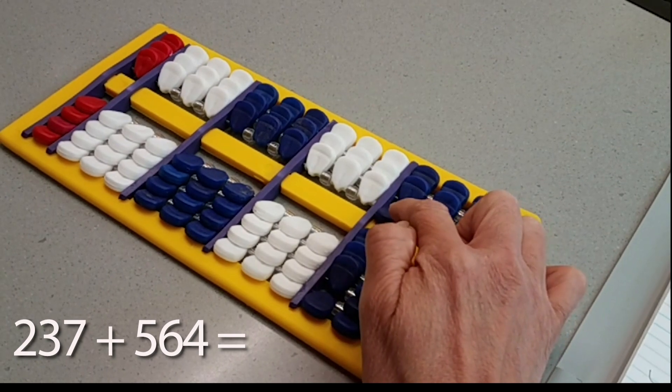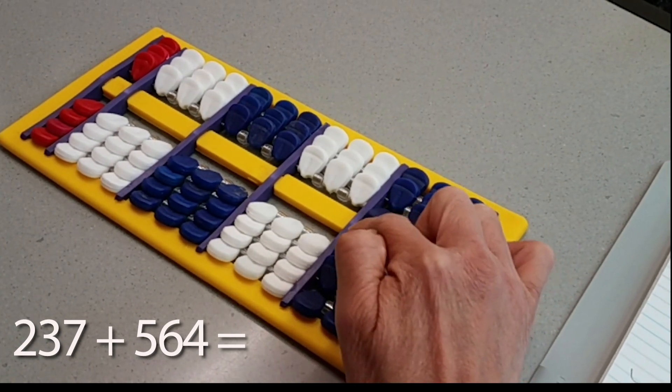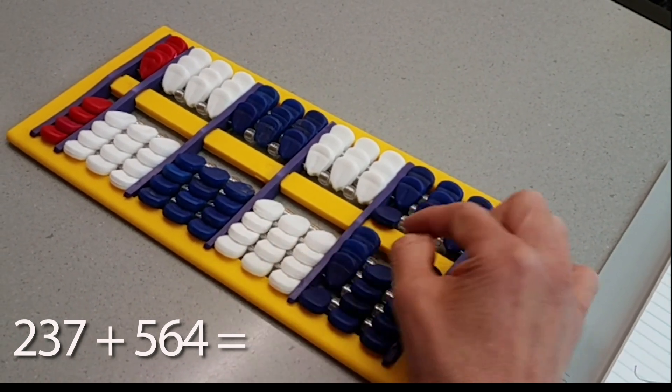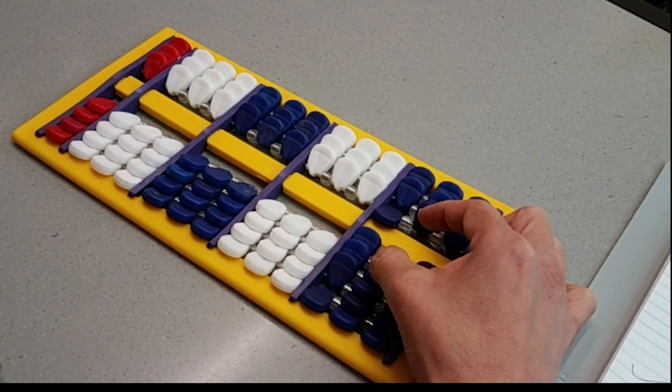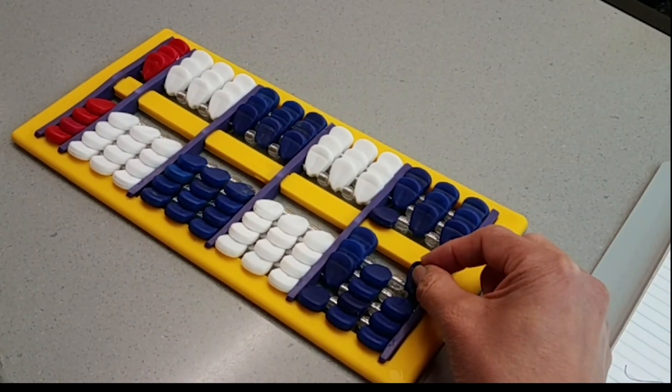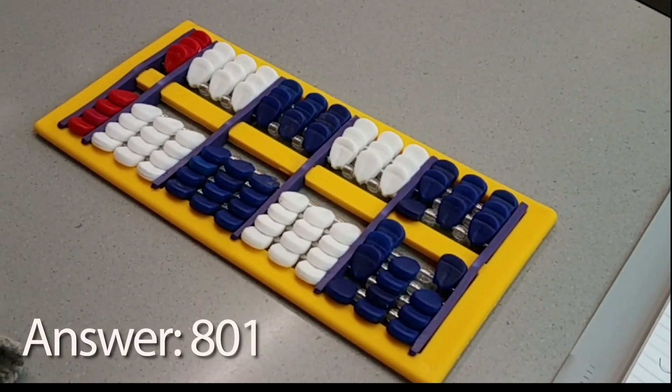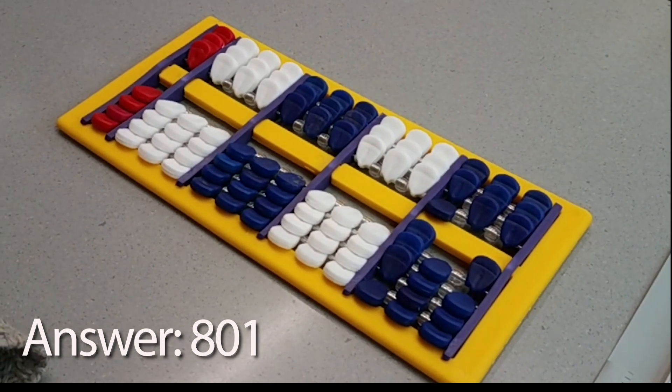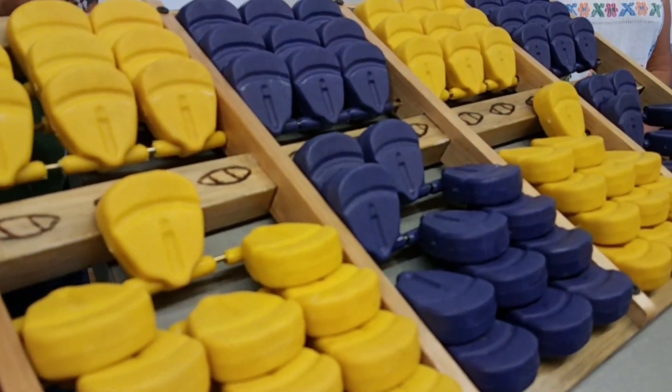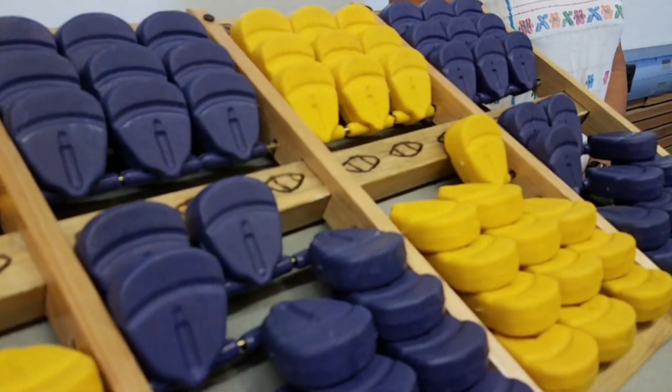So now my final answer should be 5, 6, 7, 8, which is 800. There's nothing here, so this is a 0. And then there's a 1 here. So when I add it together, I get 800 and 1. To learn more about this and other stories, visit fronterasdesk.org.